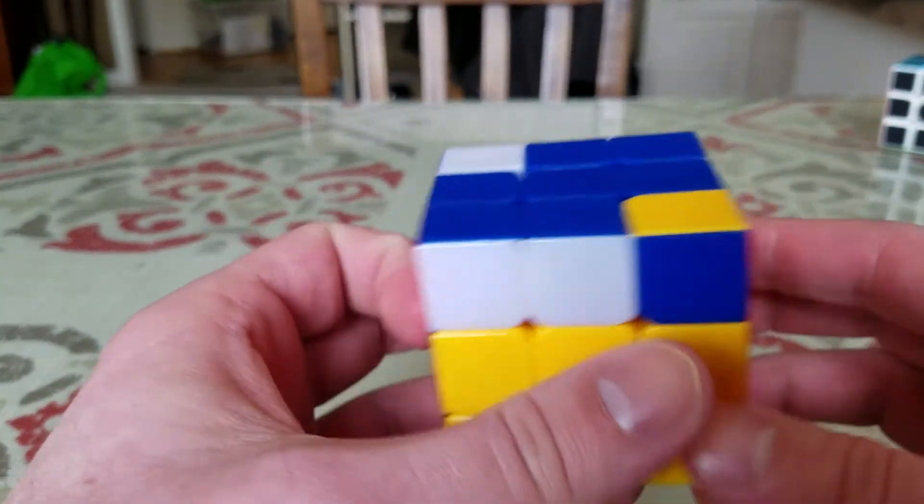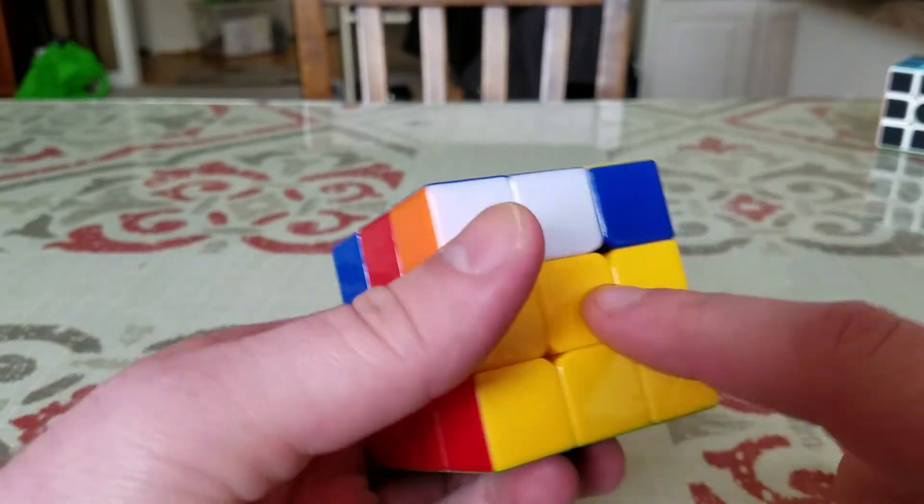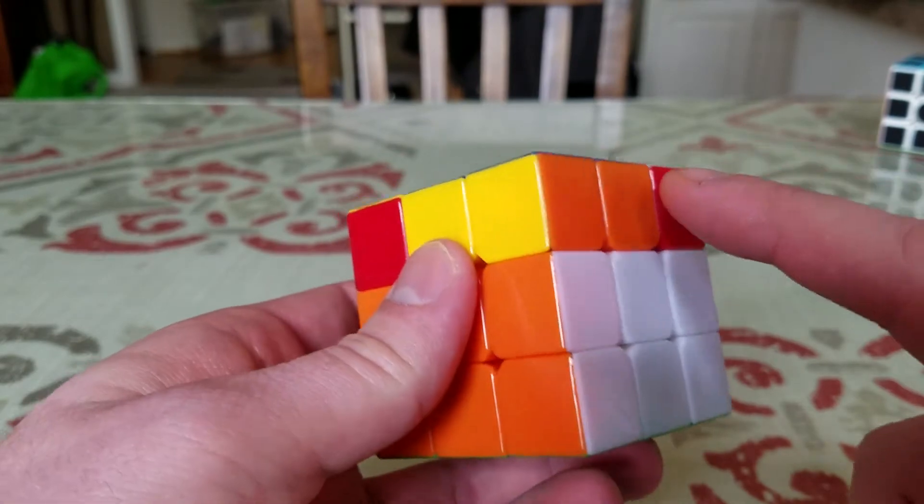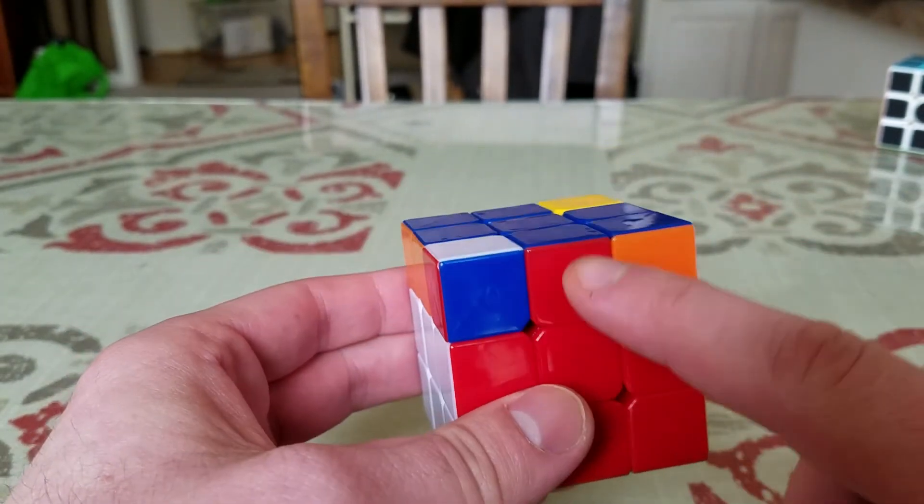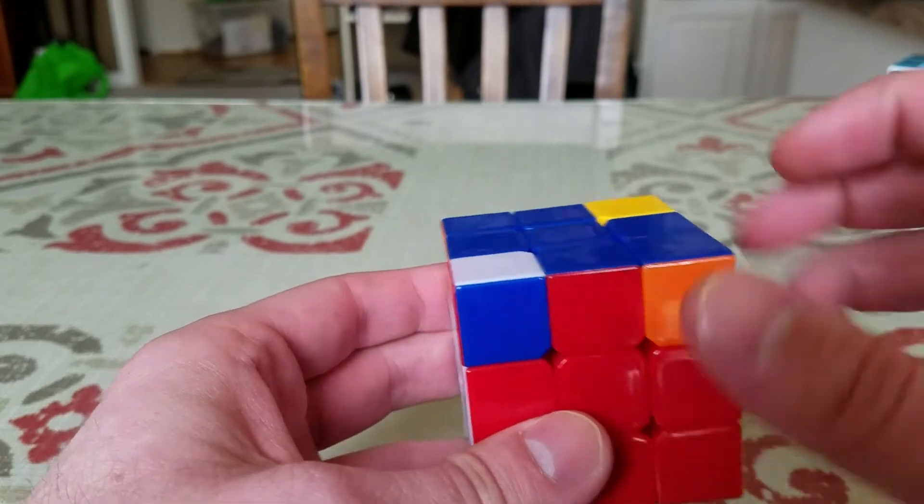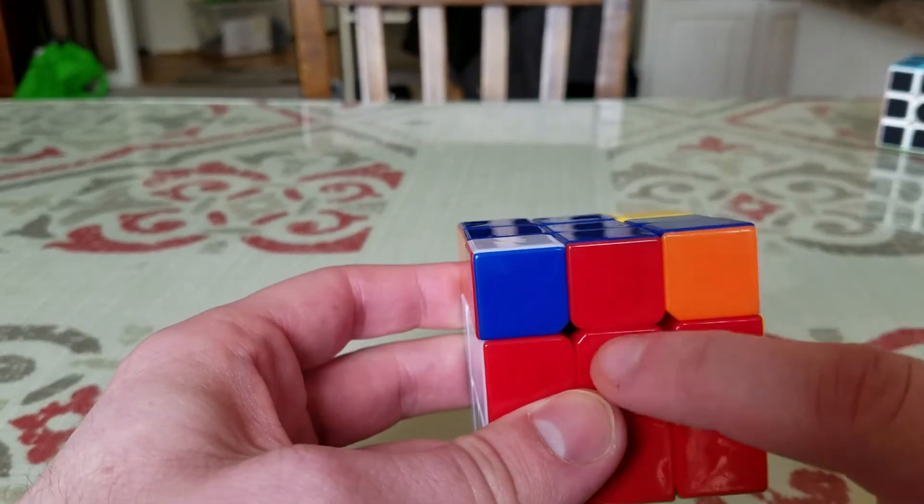What we need to do in this step is match up the sides of the blue cross with the center colors. I like to start with the red center. You're going to start with your blue cross in whatever position. I like to line up the red here.